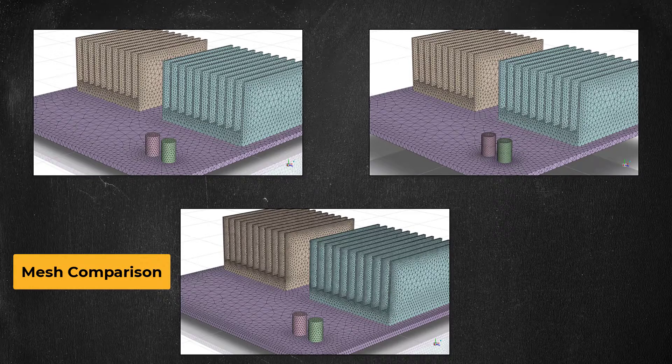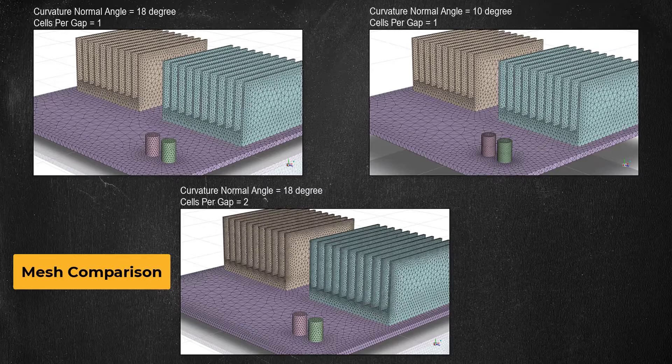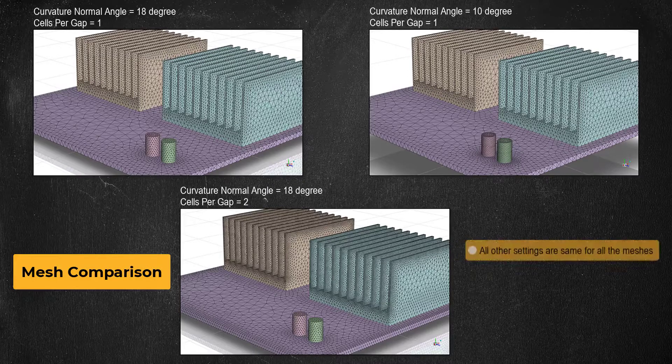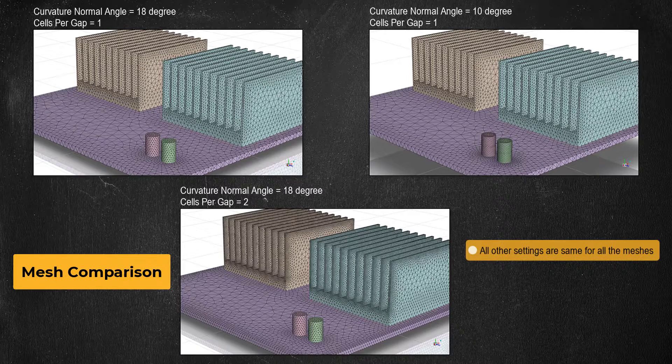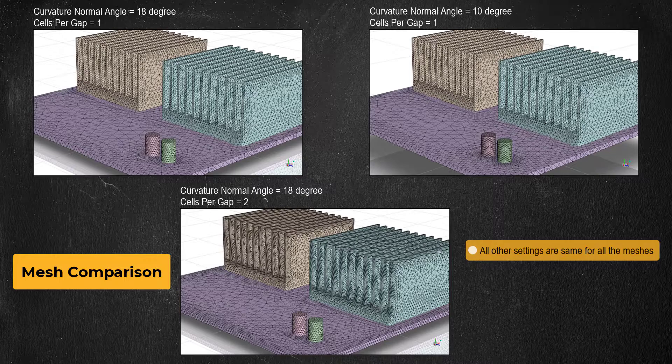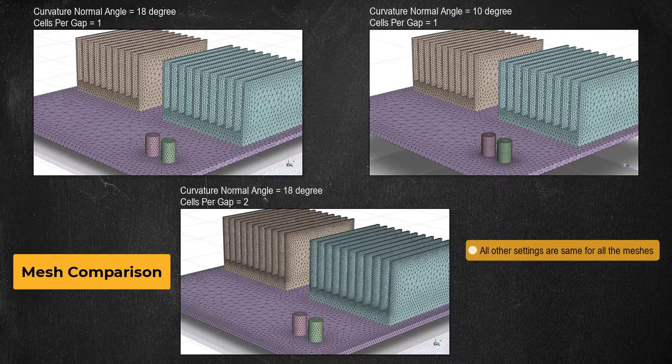The settings used for each mesh are overlaid on top of the respective images. The min max sizes and the growth rate for all the meshes are the same to facilitate a one-to-one comparison. The difference between the meshes in the top row is the value of the curvature normal angle.